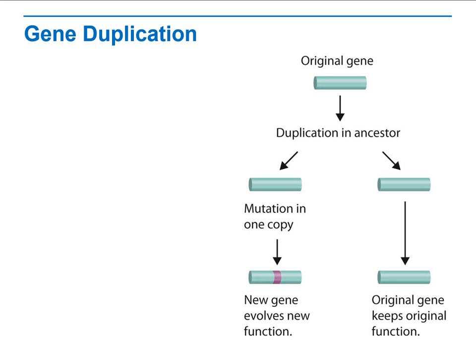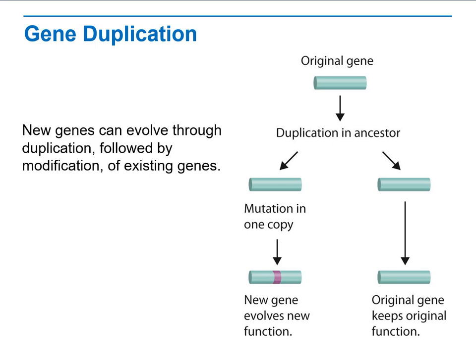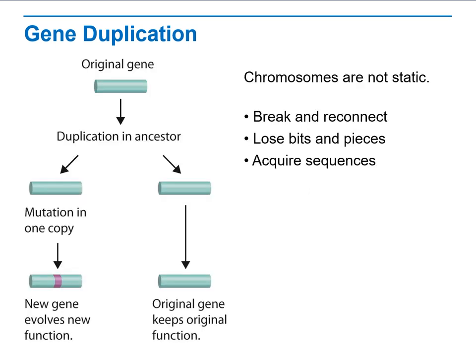When we talk about genes, we need to talk about how they duplicate. Duplication means having the same original genes from the same ancestor; they duplicate and produce two copies. One copy remains exactly the same as the original, while the other continues with a small mutation. This mutation causes a new generation to evolve and function differently. Chromosomes are not static — they break and reconnect, and loose bits and pieces are acquired in a sequence of events.